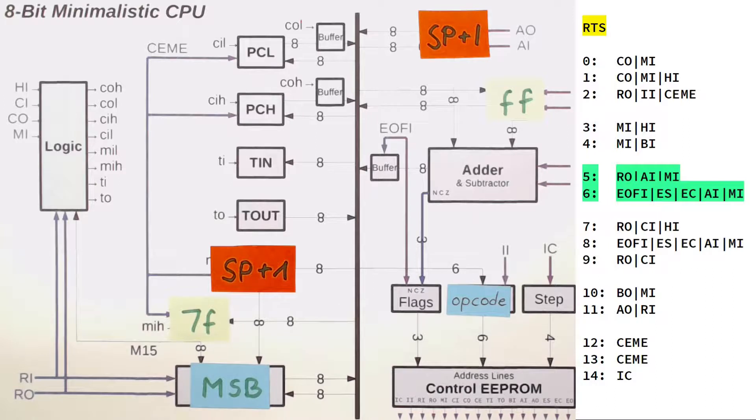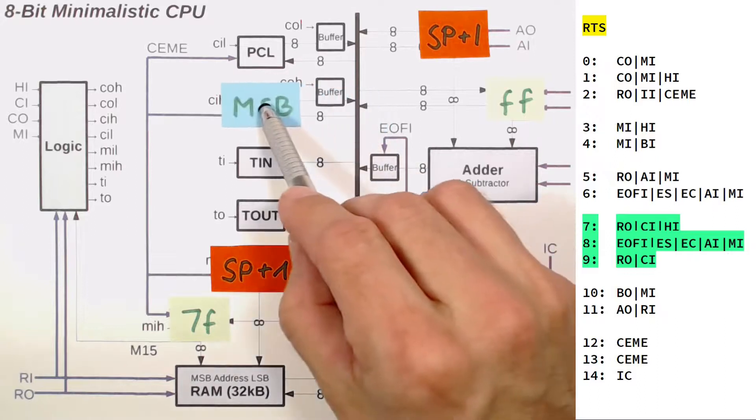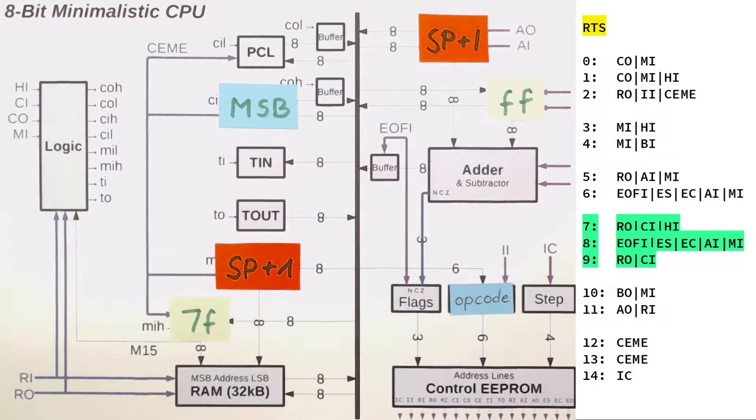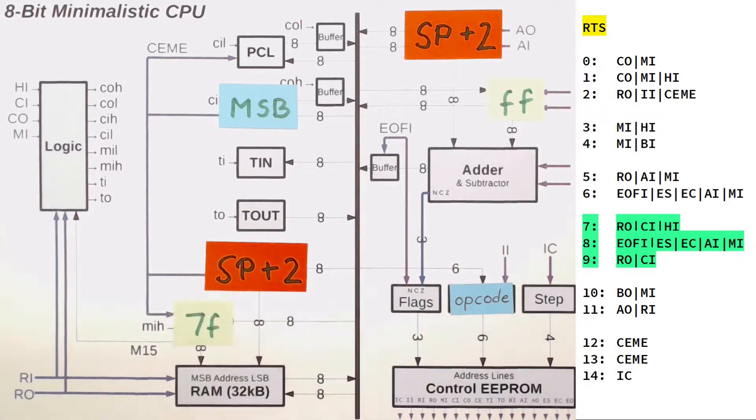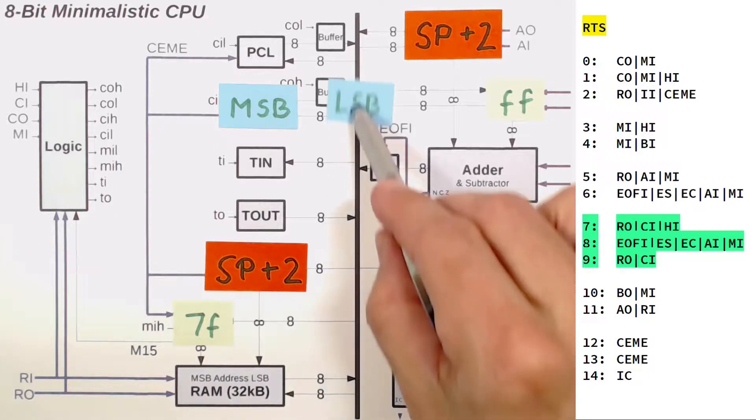Now we have exposed the MSB of our return address we've just stored on the stack. Now RAM OUT COUNTER IN HIGH moves that MSB back into our program counter. Microstep line number 8 increments A and the MAR again so that both point to the stack pointer plus 2 now. Note that now we have the LSB of our return address exposed. So RAM OUT COUNTER IN finally moves it back into the program counter.